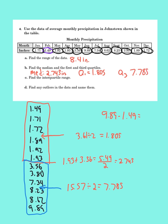Now for part C, it says find the interquartile range. So remember, that interquartile range, I have to subtract Q3 minus Q1. So 7.785 minus 1.805. And if I do that, I get 5.98 for my interquartile range. So that's the IQR.